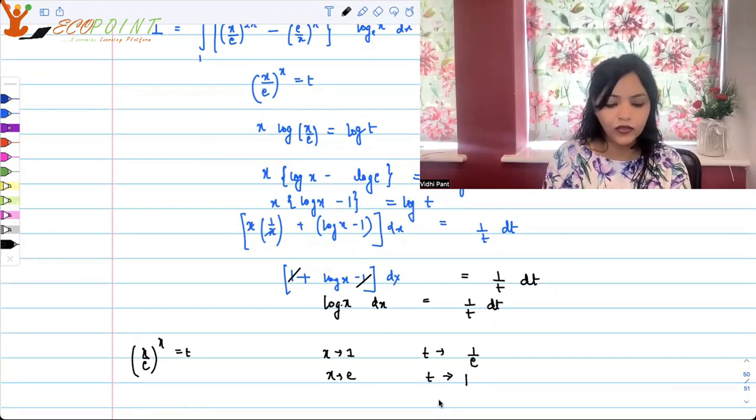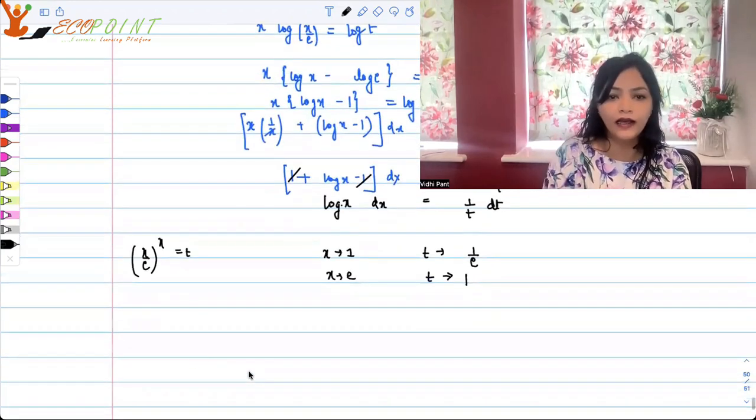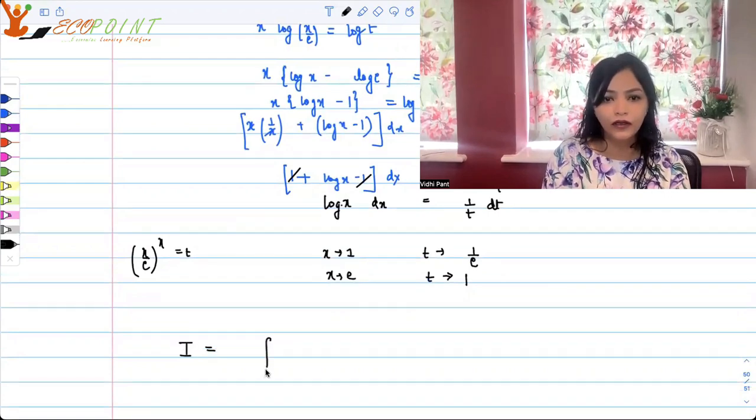So that means our integral I turns into integral. Now where it was 1, you have 1 by e. Where it was e, you have 1. So your integral is 1 by e to 1.